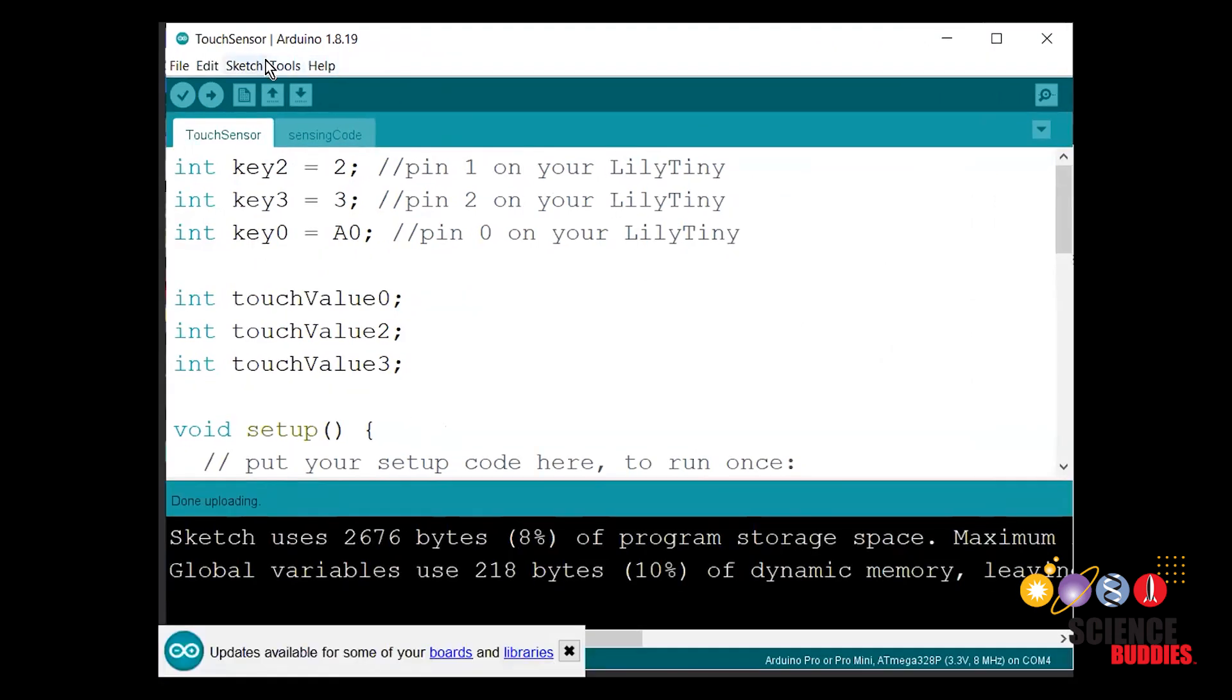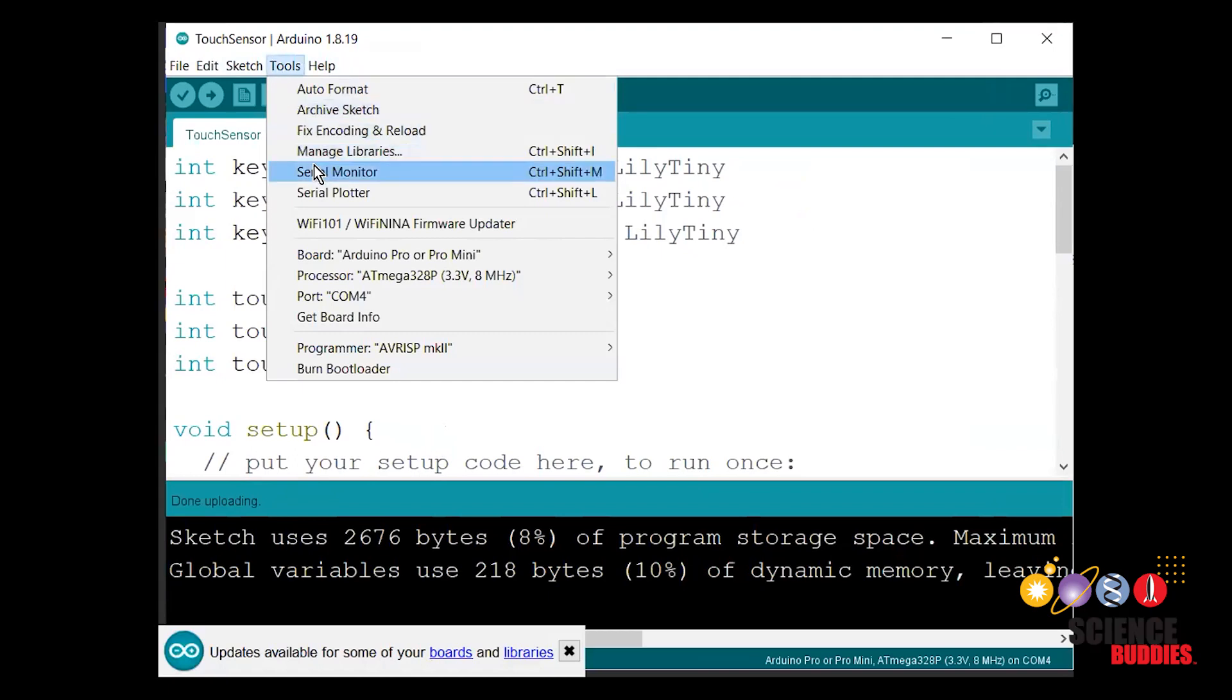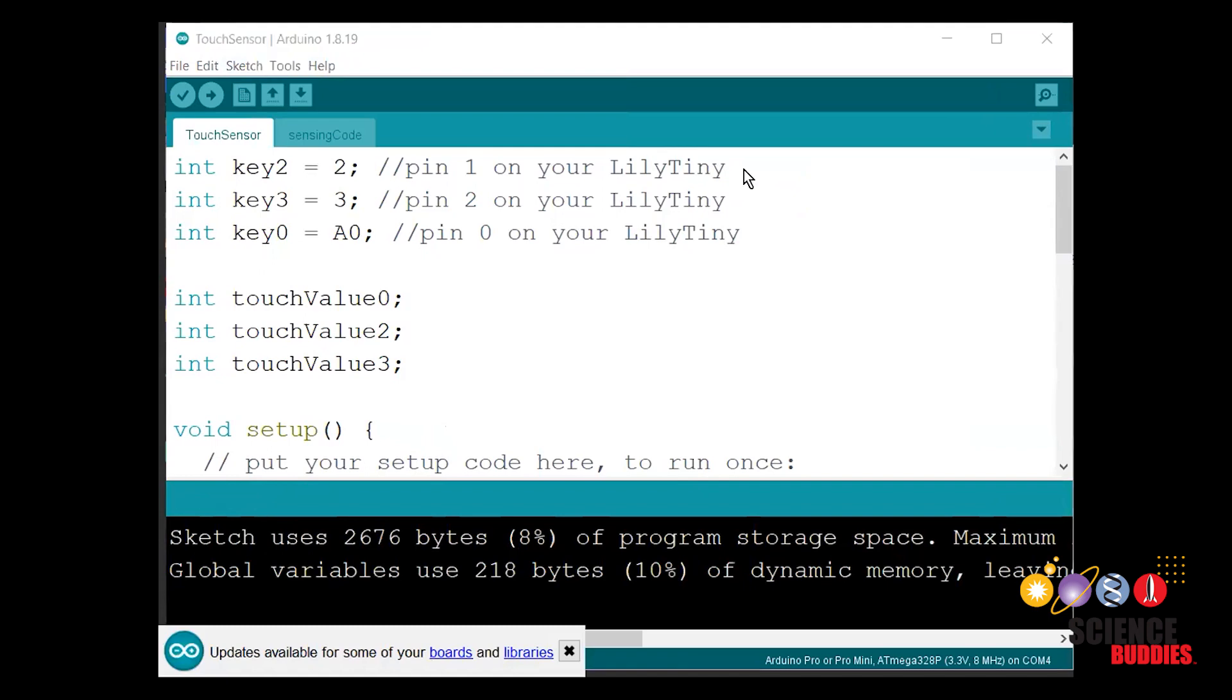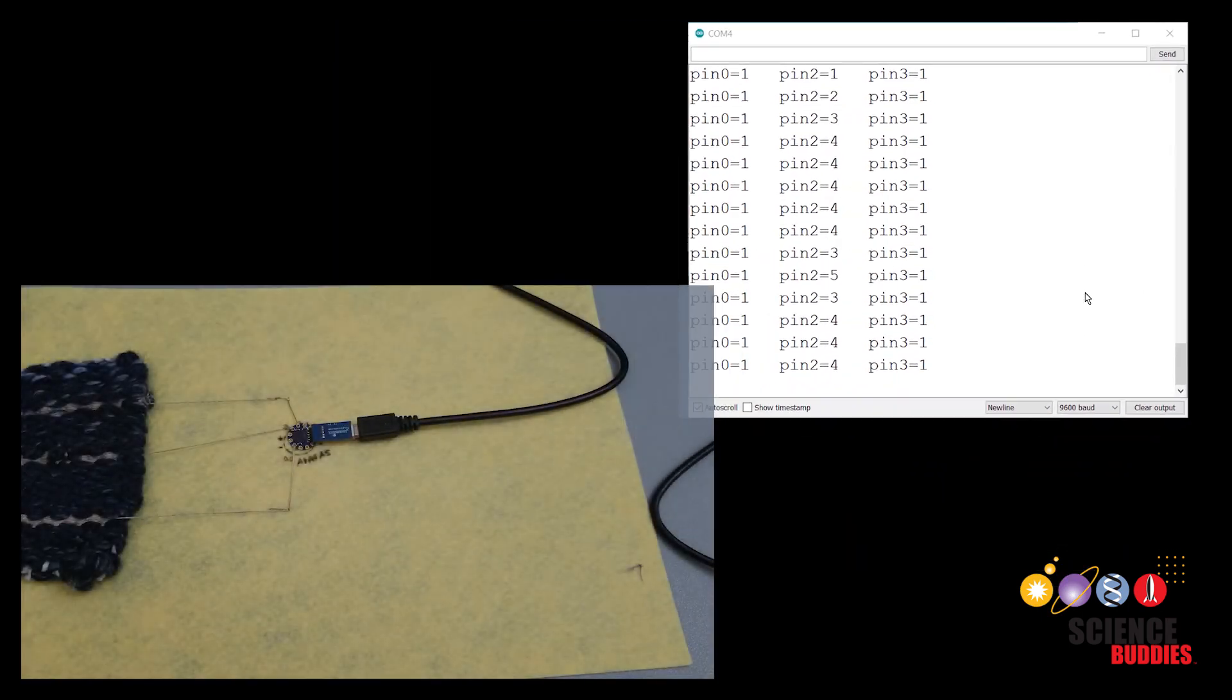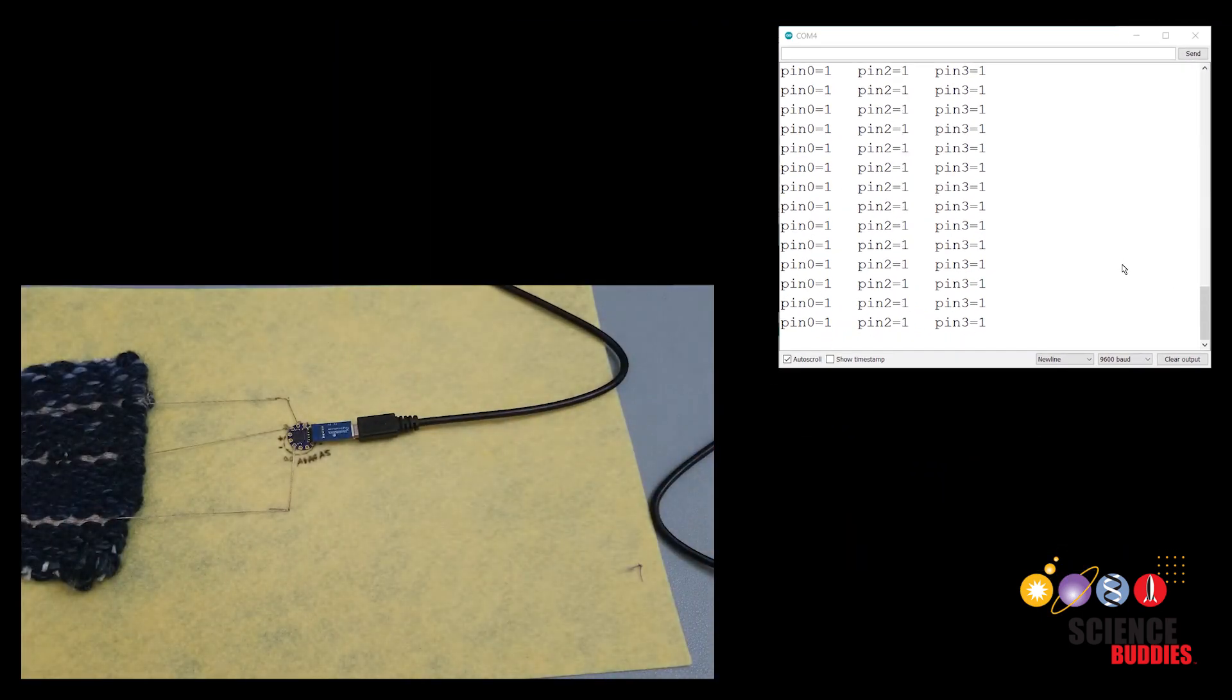Now, open the Serial Monitor by selecting Tools, Serial Monitor. A new window should pop up. Once your Arduino code has successfully uploaded onto your Tiny Lily, you should see different pins being represented as text. Look at the Serial Monitor when you are not touching woven conductive thread patches. All of these pins should have a value of 1.